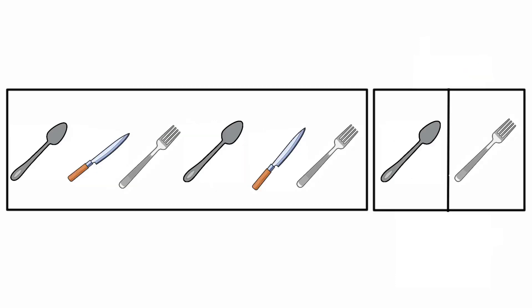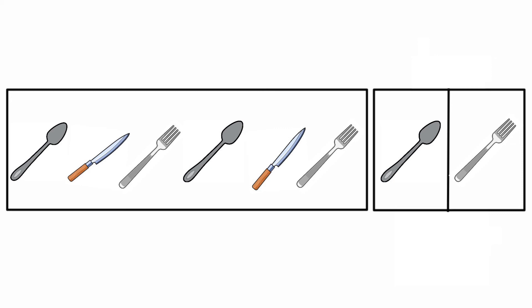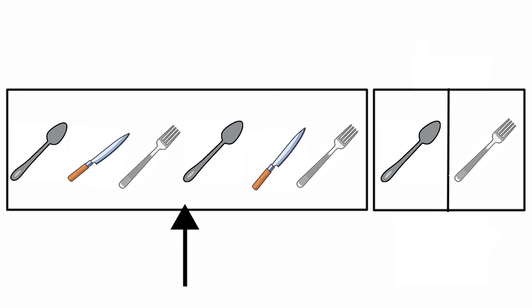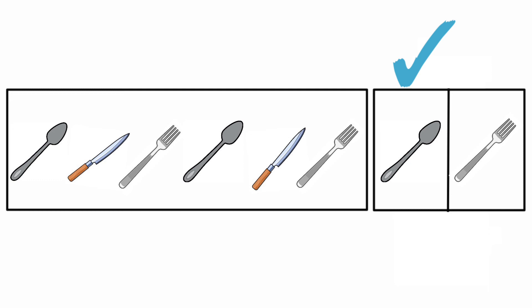Then look at the next set of pattern: spoon, knife, fork. It's the first set. We need to fulfill the complete set of patterns. Spoon, knife, fork. Spoon, knife, fork. Then what comes next? Yes, correct - spoon. So here we need to take spoon and then complete the pattern.